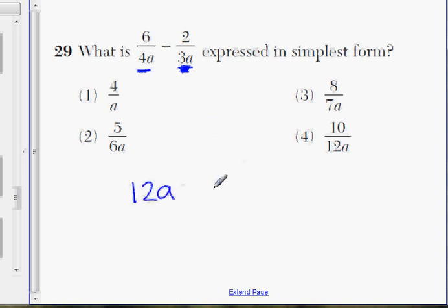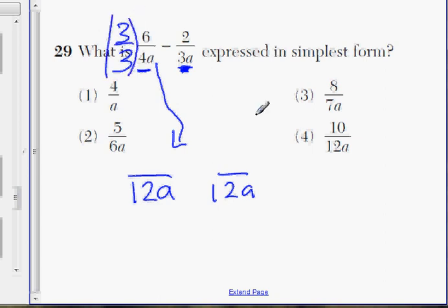Let's change 4a into 12. What do we need to multiply 4a by to get 12? We need to multiply by 3 on the bottom. And wherever we multiply the bottom by, we also need to multiply the top by. So it's 3 over 3. The top is going to be 3 times 6, which is 18.